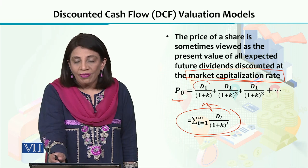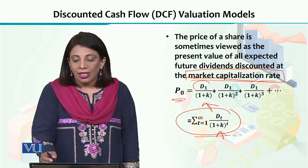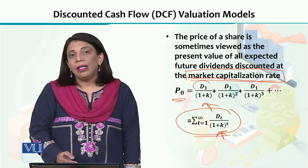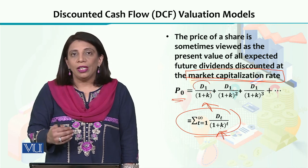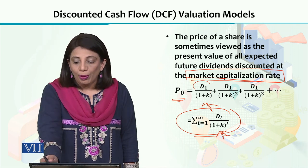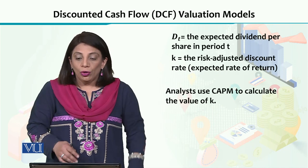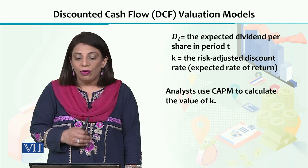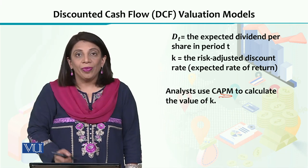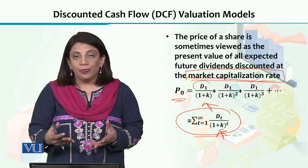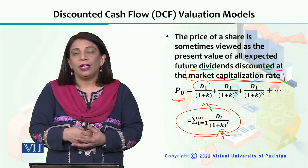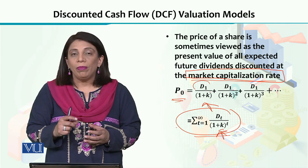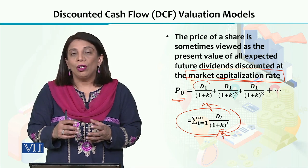In this formula to calculate the present value of future dividends, we use the CAPM concept — the capital asset pricing model — to derive the value of K, the expected rate of return. We plug that into the formula to calculate the present value. Here, dt is the expected dividend per share in period t, and K is the risk-adjusted discount rate, or expected rate of return, which you calculate using CAPM. This is how we use the expected rate of return from CAPM to estimate the discounted cash flow valuation of future dividends.